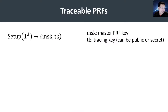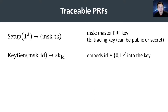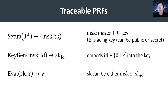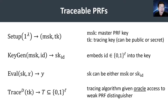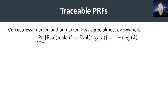More formally, the syntax of a traceable PRF consists of four algorithms: a setup algorithm that samples the pseudorandom key; a key generation algorithm that embeds a mark or identifier within the key; an evaluation algorithm that implements PRF evaluation; and finally, a tracing algorithm that, given oracle access to some distinguisher, will produce an identity or set of identities used to construct that distinguisher. The properties we require are: correctness — meaning the unmarked master PRF key should implement roughly the same functionality as the marked version; pseudorandomness — evaluation using the PRF key induces a pseudorandom distribution.